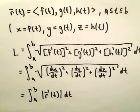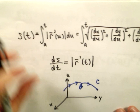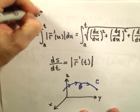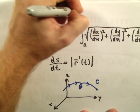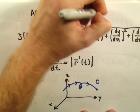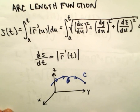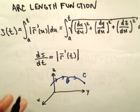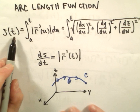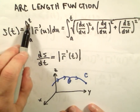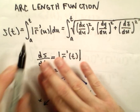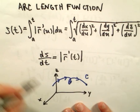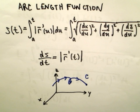So we're going to define a new function from this — this is going to be the arc length function. It's basically the exact same formula, except now the variable t is going to be the upper limit of integration.